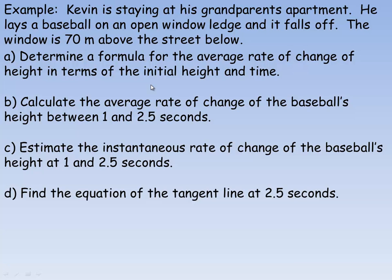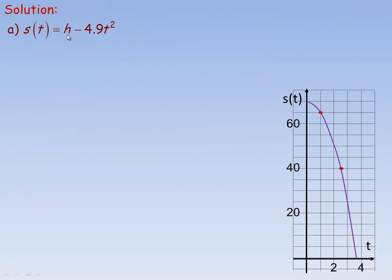Now this is an example I'm going to do on the next couple of pages. Kevin is staying at his grandparents' apartment. He lays a baseball on an open window ledge and it falls off — the window is 70 meters above the street below. We're going to do four things: determine a formula for the average rate of change of the height, use that to calculate the average rate of change between 1 and 2.5 seconds, find the instantaneous rate at 1 and 2.5 seconds, and find the equation of the tangent line at 2.5 seconds.